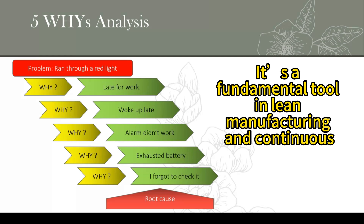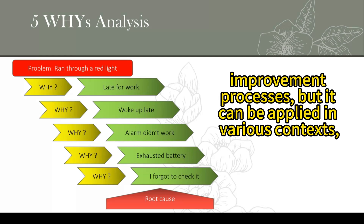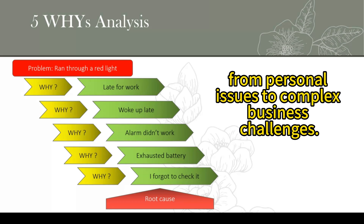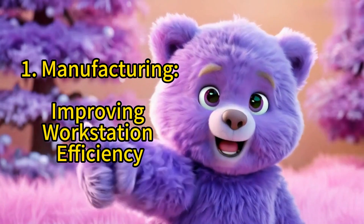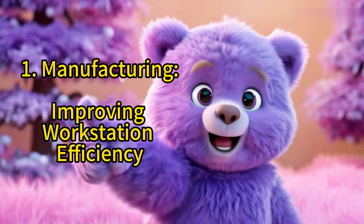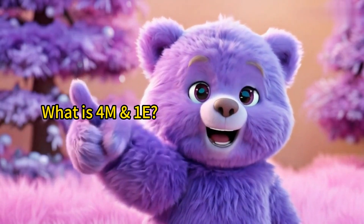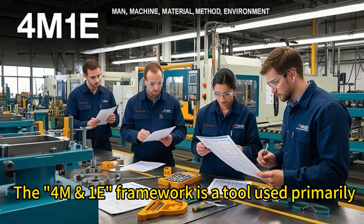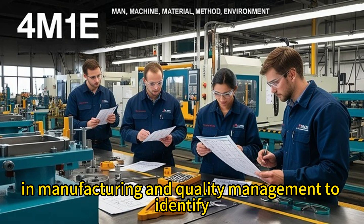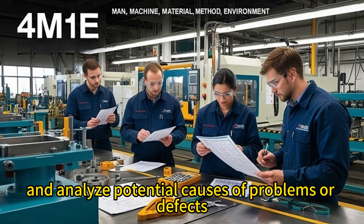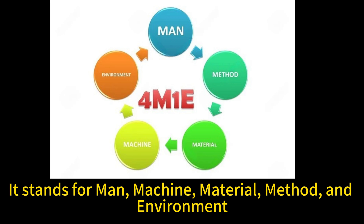The technique is useful because it helps go beyond surface-level solutions and address underlying issues. It's a fundamental tool in lean manufacturing and continuous improvement, but can be applied in various contexts — from personal issues to complex business challenges. As an example, we'll use 5 Whys analysis with the 4M and 1E framework. The 4M and 1E framework stands for Man, Machine, Material, Method, and Environment.